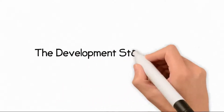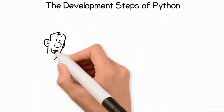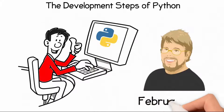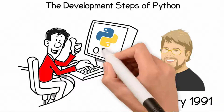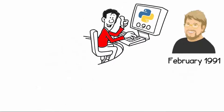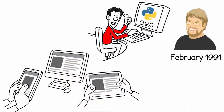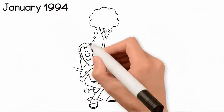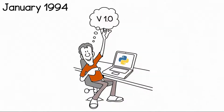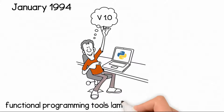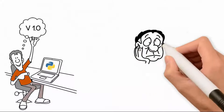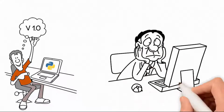The development steps of Python. The first version was developed by Guido van Rossum at Alt.sources in February 1991, named version 0.9.0. This version included exception handling and core data types such as list, dict, str, and others. January 1994 saw the release of Python version 1.0, which added functional programming tools: Lambda, Map, Filter, and Reduce. Van Rossum had a significant distaste for these additional features.